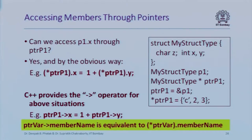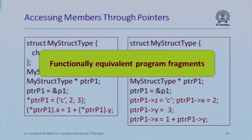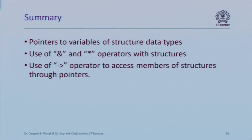The arrow operator can only be used with a pointer to a structure, whereas the dot operator is used with an object of that structure type. For example, you could initialize star pointer_pt1 directly, or use pointer_p1 arrow z = 'c', pointer_p1 arrow x = 2, pointer_p1 arrow y = 3. These are two completely functionally equivalent programs.